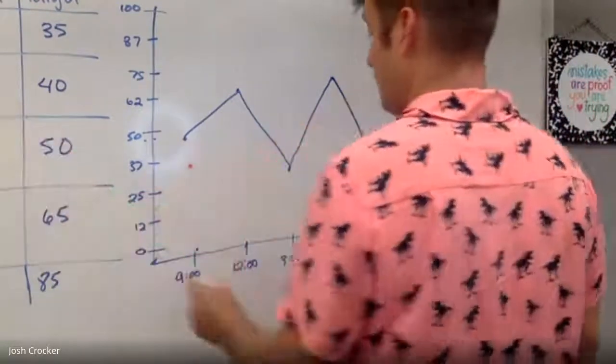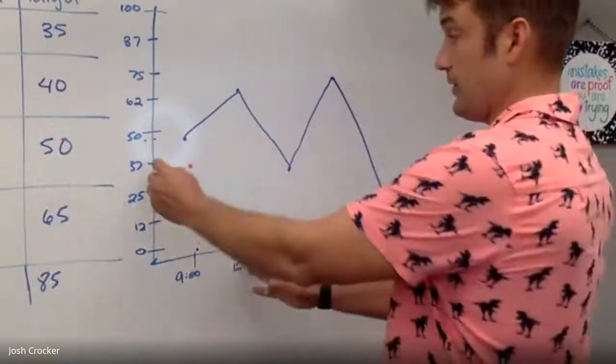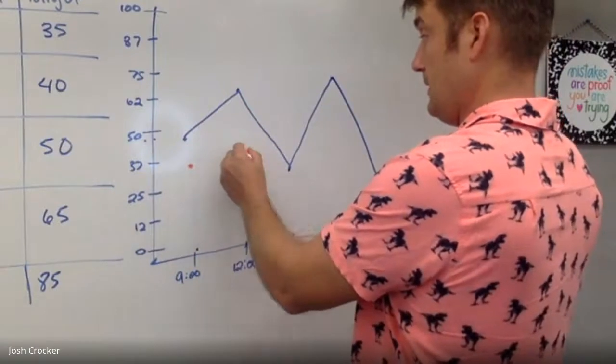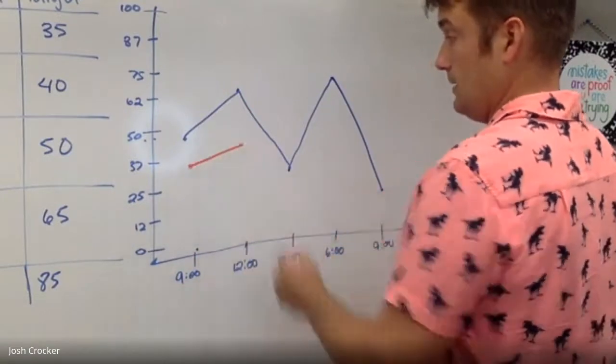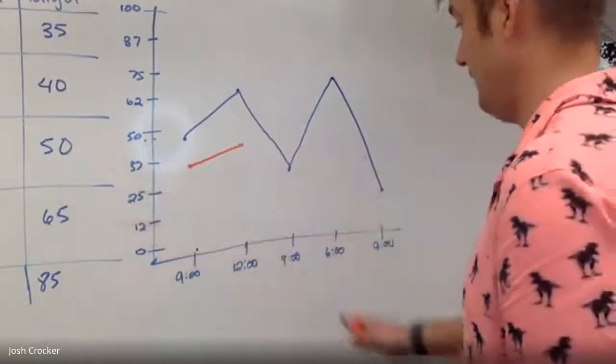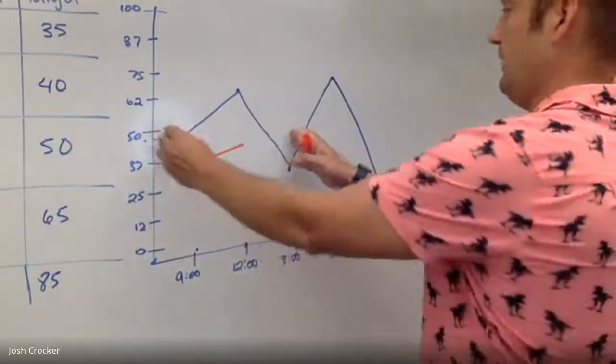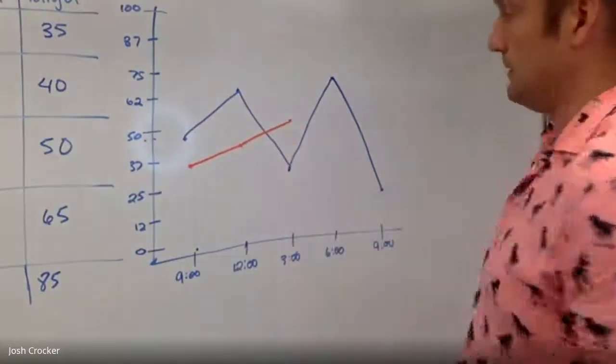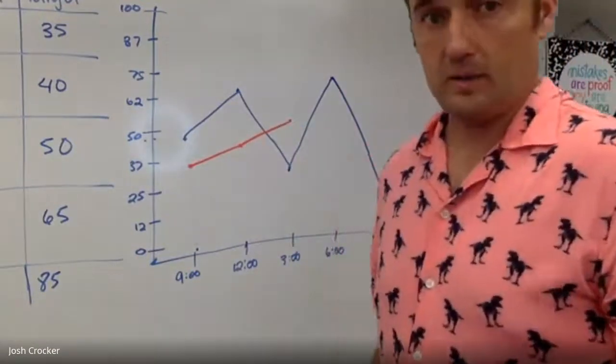At 12, they had 40. Here's 12. 40 is a little bit more than 37. Right there. At 3, they had 50. So at 3 o'clock, Target was busier.